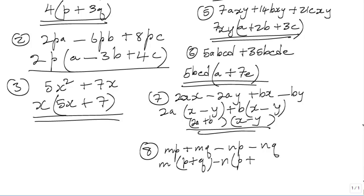We reach the stage where in the brackets you must have the same things. So you're going to make your two pairs of brackets. What is outside the bracket in one pair is M minus N. And what is common in the other pair of brackets is P plus Q. So for question 8 the solution is M minus N in brackets times P plus Q in brackets. Hope you got most of these questions correct.